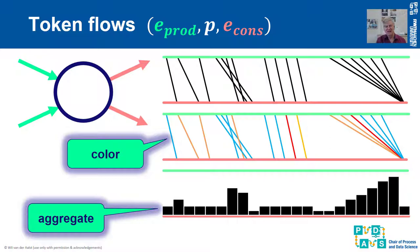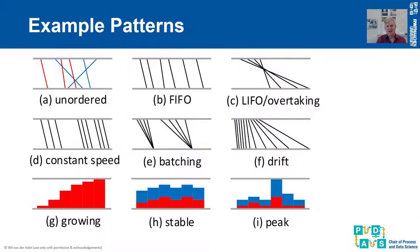For example, things like conformance drift that we would normally not see. Here are some example patterns. A performance spectrum could show that activities are completely irregular, or that it is a nice first-in-first-out with no crossing lines, or last-in-first-out where cases that arrive later are served earlier.